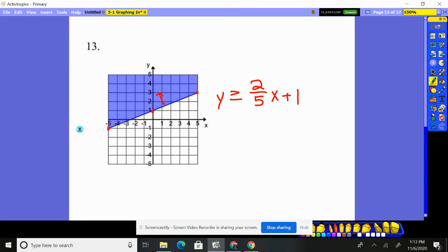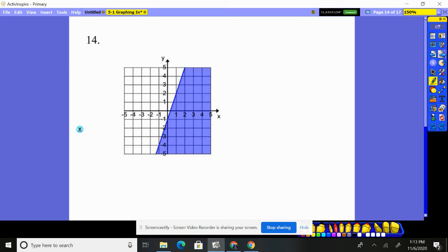Number 14. We shaded below, below the line, so y is less than or equal to because it's a solid line. We just need the slope. Well here's a point and then the next perfect point's there, perfect crossing there. So it looks up 3 over 1, so 3x. It crosses the y-intercept at negative 1, so minus 1.